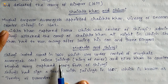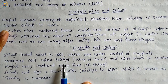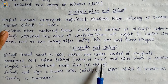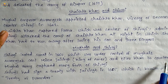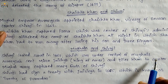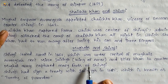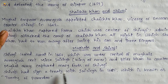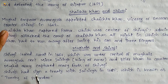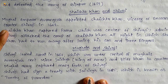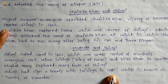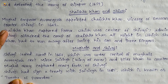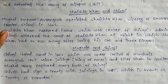Aurangzeb sent Mirza Raja Jai Singh, who was the king of Amber, and Dilir Khan to counter Shivaji. The Mughal army captured many forts of Shivaji. Shivaji signed a treaty with Mirza Raja Jai Singh in 1665, which is known as the Treaty of Purandar.